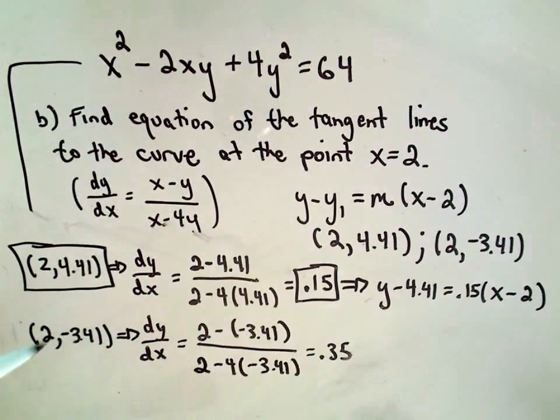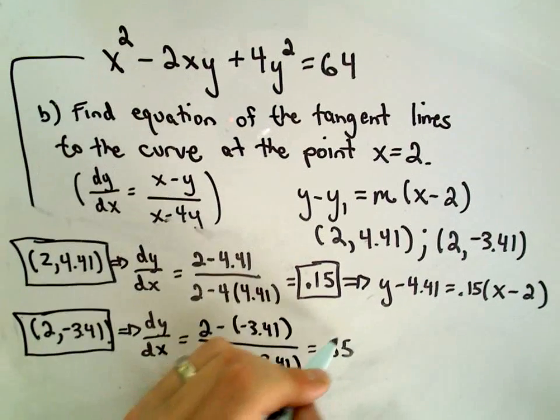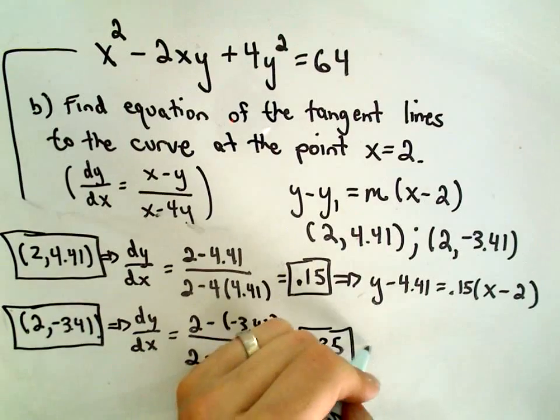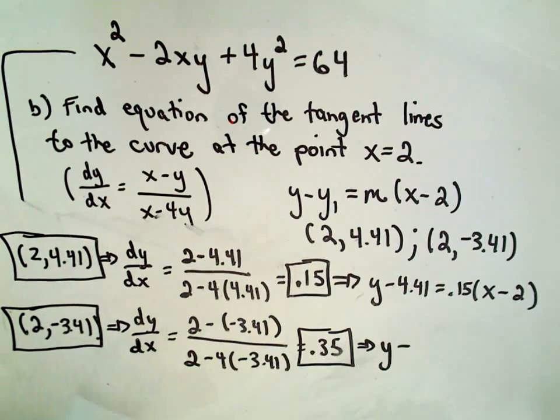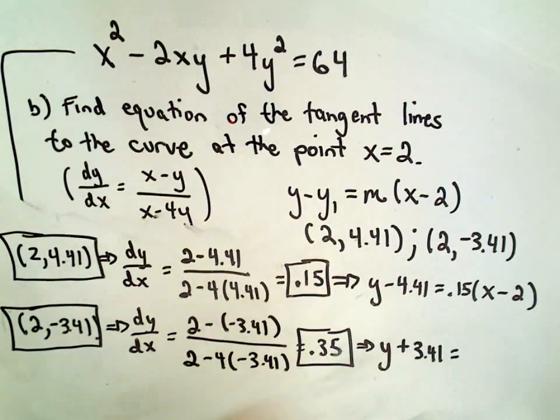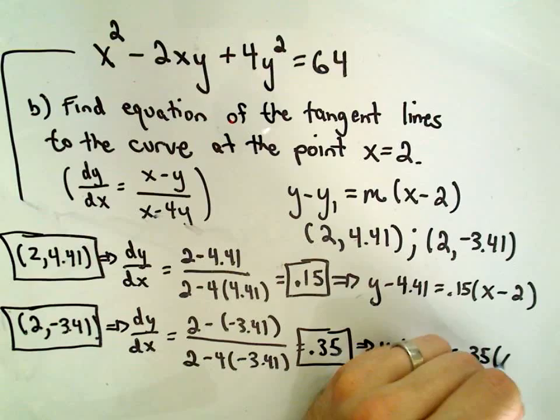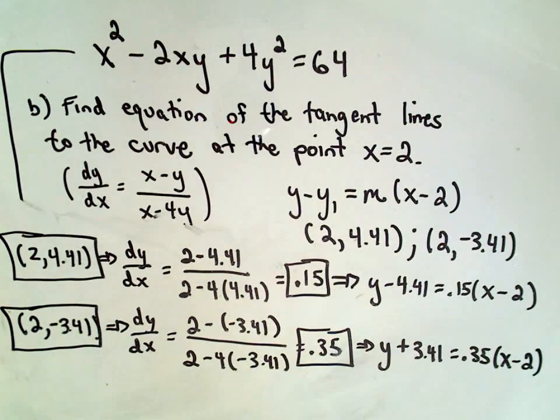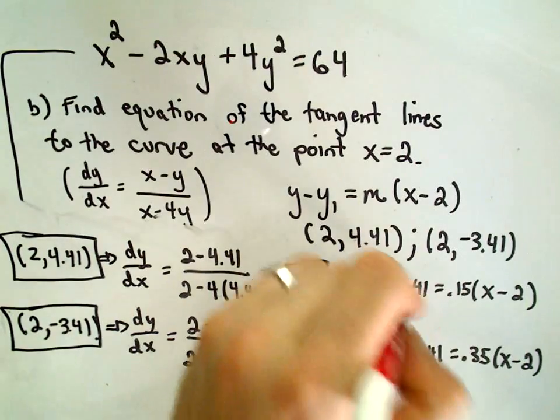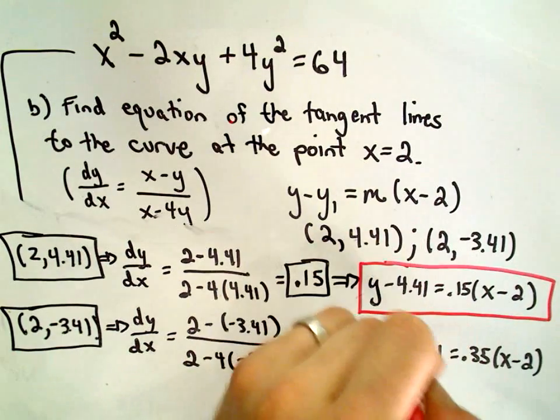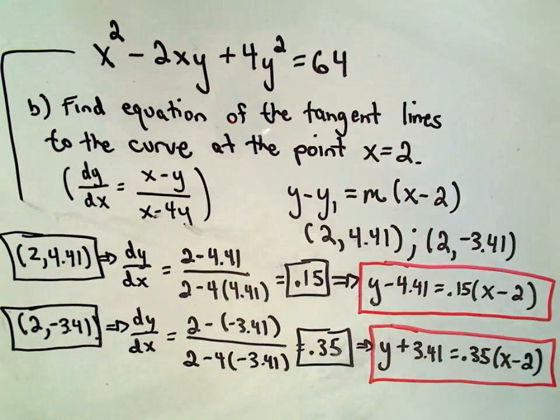So that'll give us one of our tangent lines. And the same thing, if we use the other point, we use that corresponding slope, it says the equation of that tangent line will be y minus the y coordinate, which will give us y plus 3.41. The slope again is 0.35, x minus the x coordinate. And I think I would call it a day at this point. I don't think, I think if you did all of this, I think you'd be good. But I don't think you have to write this in slope-intercept form, y equals mx plus b. So all right, I hope this example makes some sense. Again, feel free to look at part A and also part C. It'll be close by.